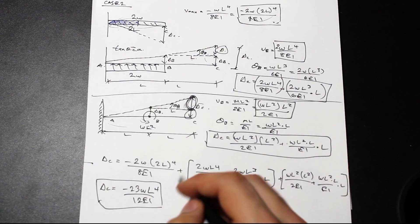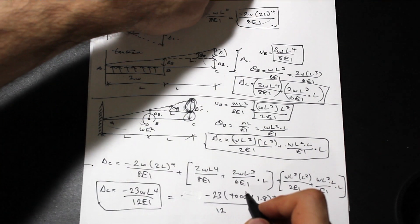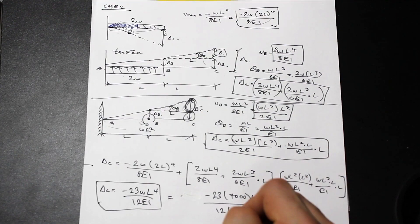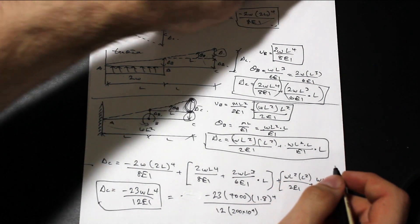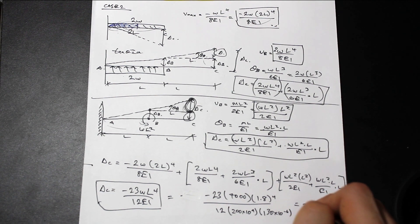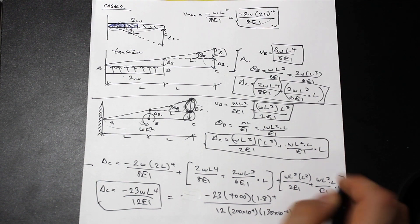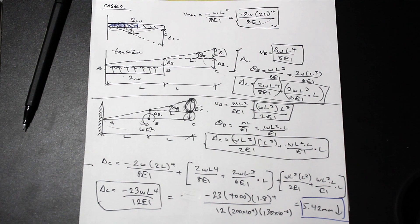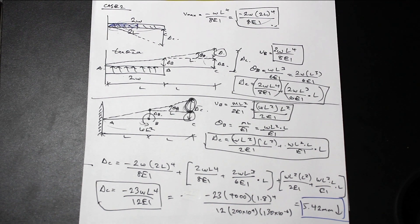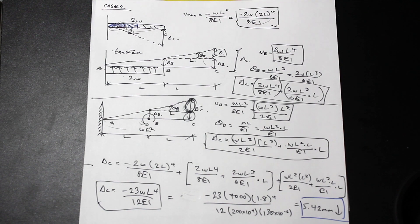Plugging in our numerical values: 23 × 7000 N/m × (1.8 m)⁴, divided by 12, E = 200 GPa = 200 × 10⁹ Pa, and I in m⁴. Calculating gives a deflection of 5.42 millimeters, and it's negative, meaning downward. That's quite a tricky problem — if you can do that, you should be good in this section. I hope you enjoyed the video. Give it a try on your own and post in the comments. I'm Fred from AdMath Engineering — thanks for watching, take care.